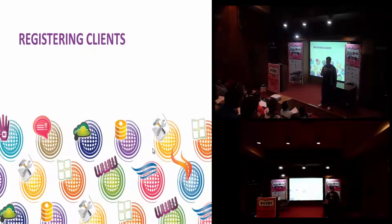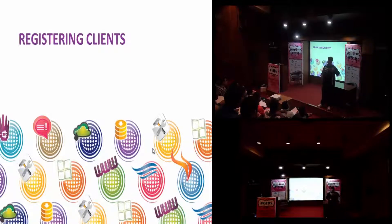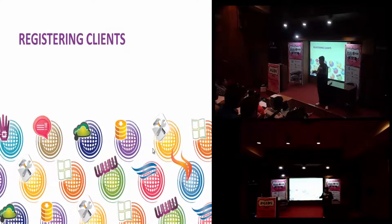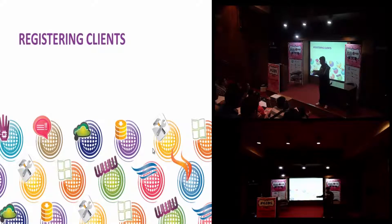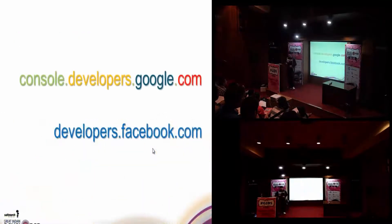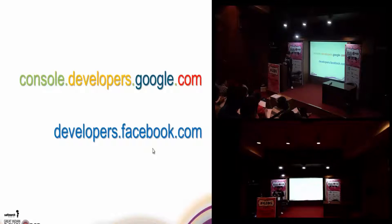The first step to writing an OAuth client for these two providers is that we need to create an app and register it. Whatever our client is going to be needs to be registered with Facebook and Google so they know this client is going to come to them. To do that, you go to one of these two URLs. For Facebook, you go to developers.facebook.com. For Google, you go to console.developers.google.com. I am quickly going to create an application on both of these — it is a fairly simple process and should be self-explanatory.